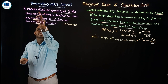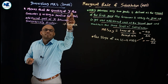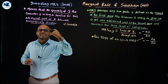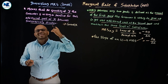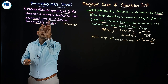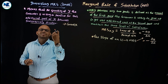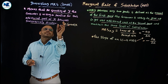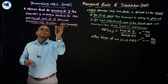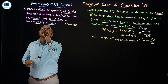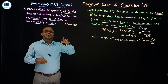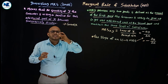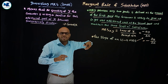Diminishing marginal rate of substitution means that the quantity of Y — the product the consumer is willing to sacrifice and give up — for each additional unit of X, that quantity of Y needed to get one extra unit of X becomes successively smaller. That is why the indifference curve is convex to the origin.